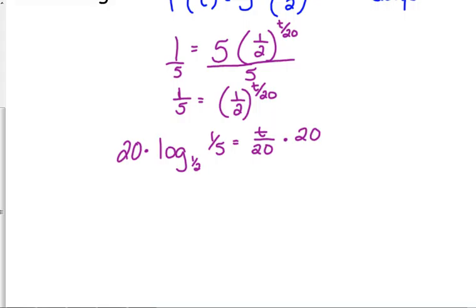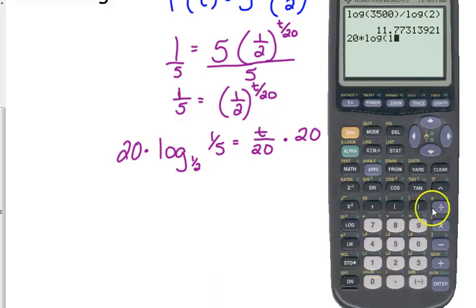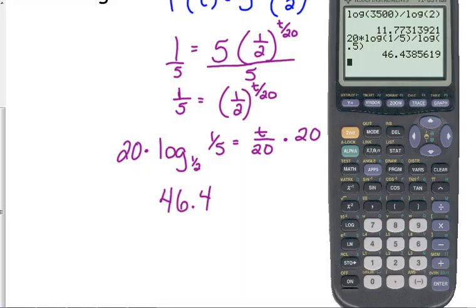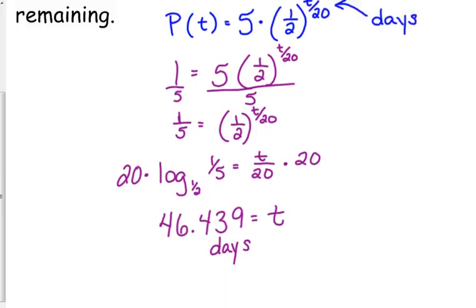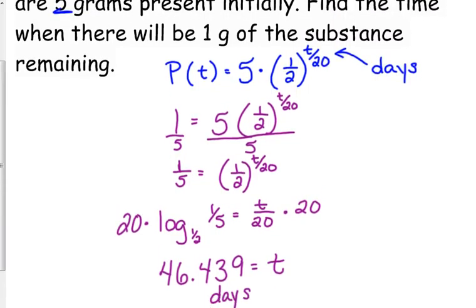The variable comes out of the exponent, or out of, gets unstuck. It's not very mathematical, but it might help you remember what happens. Then, we can multiply both sides by 20. Okay, and that 20 doesn't change the numbers inside the logarithm. It's just on the outside. So, 20 times the log of one-fifth, divided by the log of one-half, or point five. Here's an example of where the big number is not bigger than the base. One-fifth is smaller than one-half, but it's where it's at is what matters. 46.439 is equal to T, and that is in days.